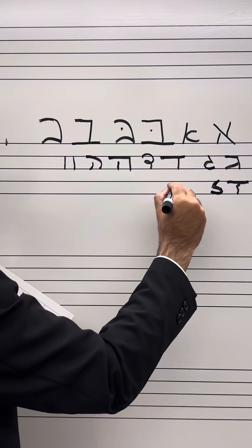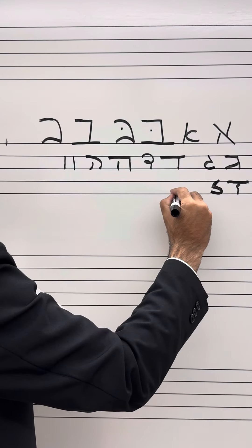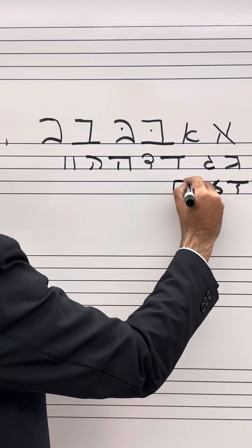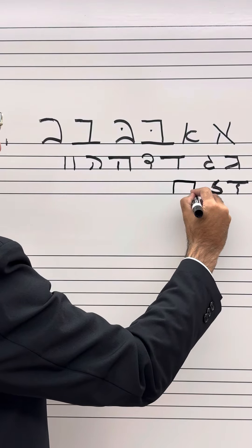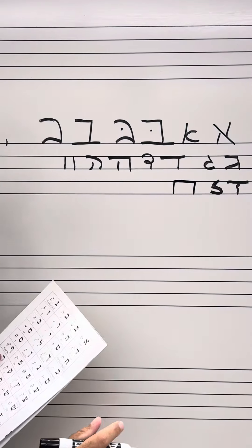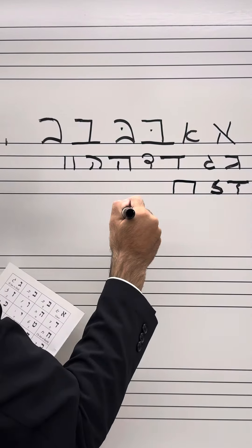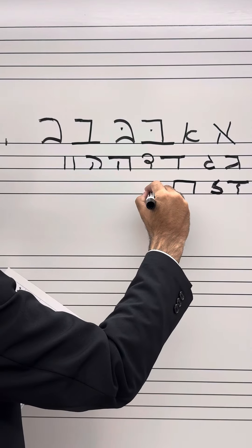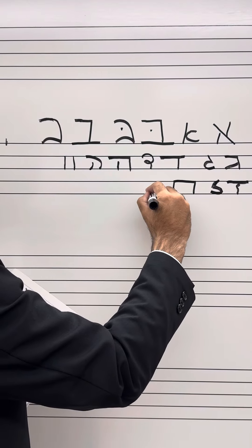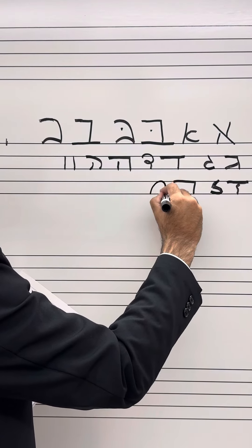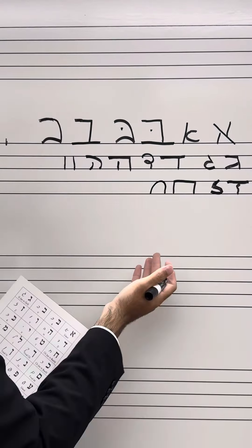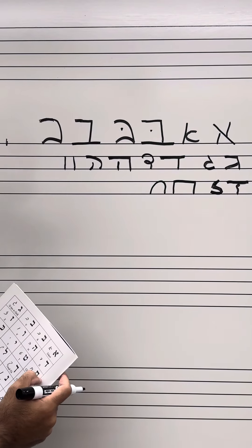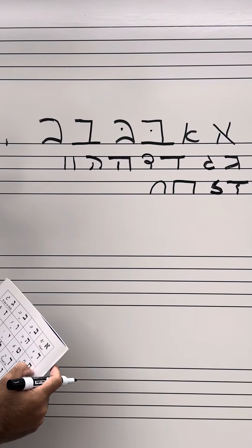Next we have the Chet. The Chet appears more square on top in the Torah. In the cursive script version it just sweeps over like that — it's more rounded. That's how Chet appears in cursive.